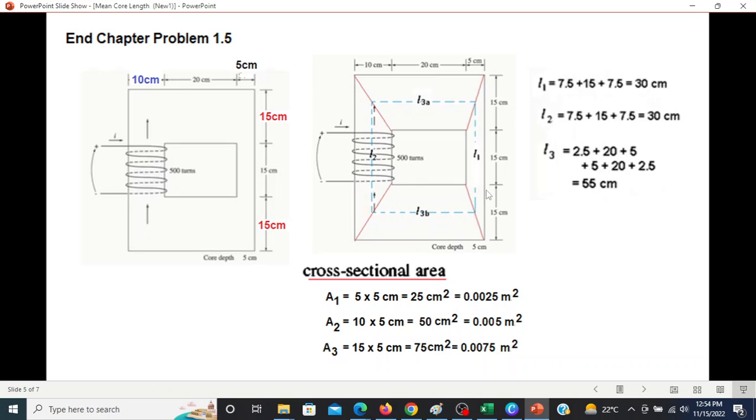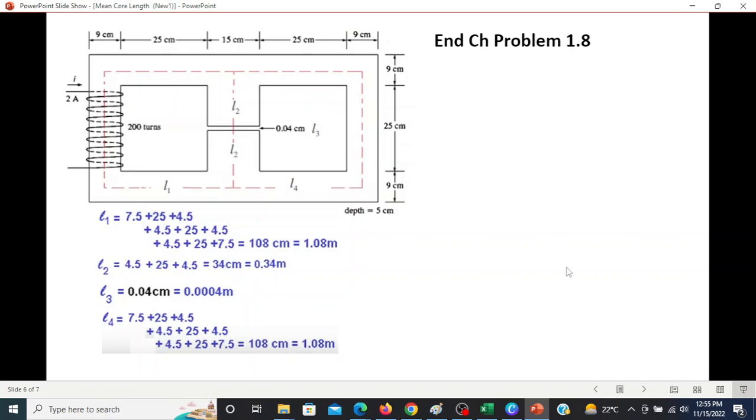And the area of cross section now. You can see 5 cm is the width and 5 cm is the depth, so 5 multiplied by 5 is 25 cm converted into meters. Then A2, this area is 10 and depth 5, so 10 multiplied by 5 is 50 cm and converted into meters. Now this one is 15 and depth 5, so 15 into 5 is 75 cm square, and the answer is 0.0075 meter square.